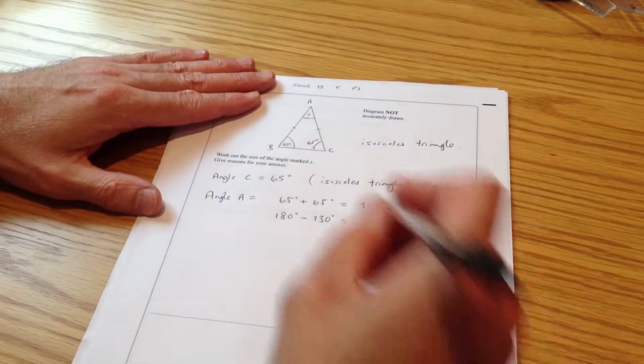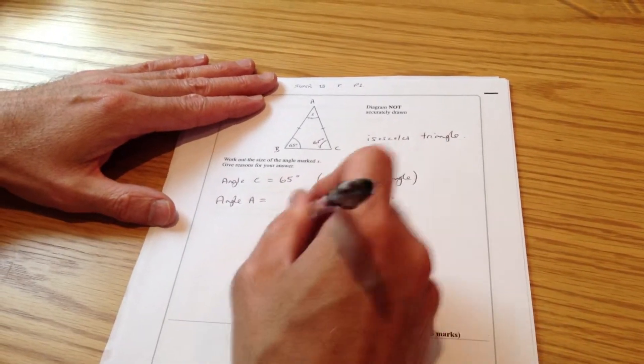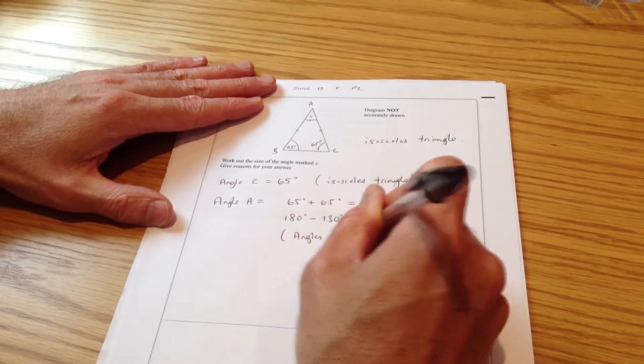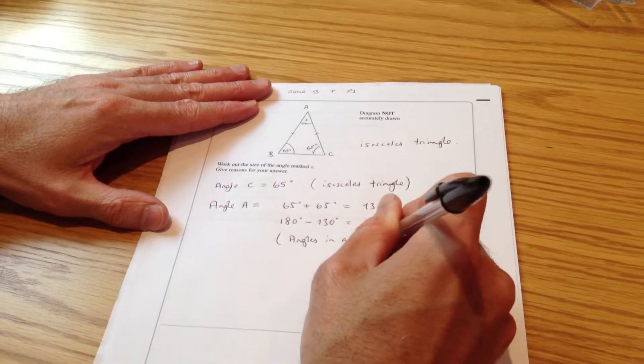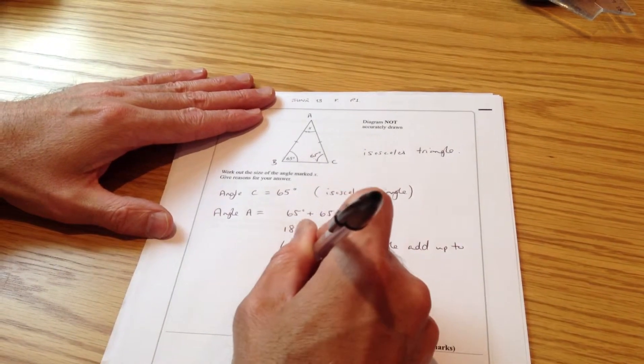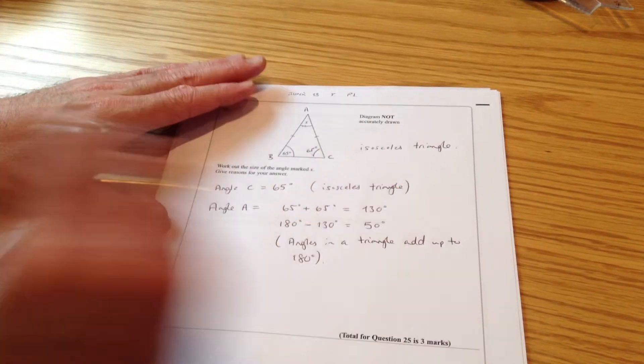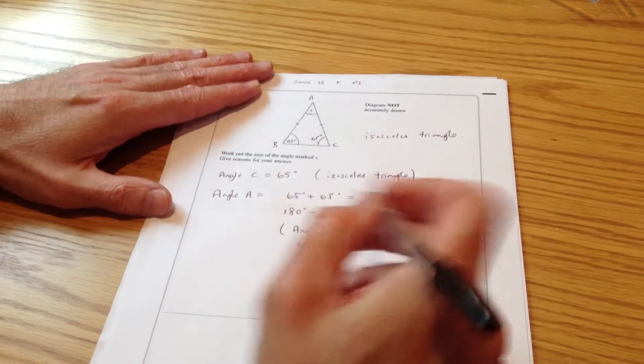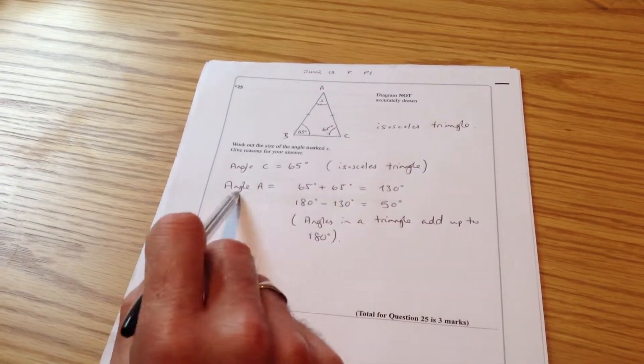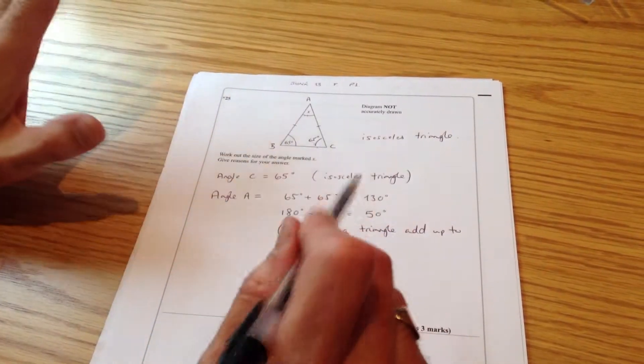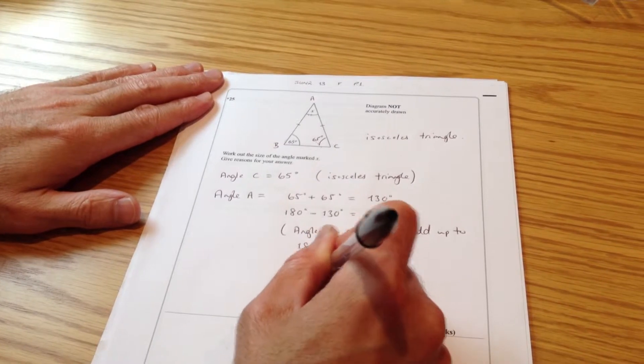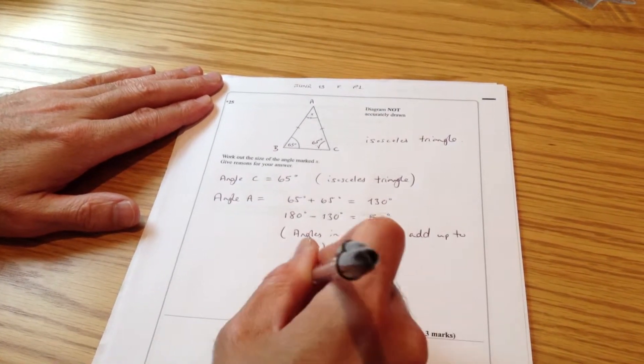So what have I used? Well, the fact I've used is that angles in a triangle add up to 180 degrees. Now at the moment I named it angle A, I've worked with angle A, but just to make sure I get the marks, I'm going to put X equals 50 degrees.